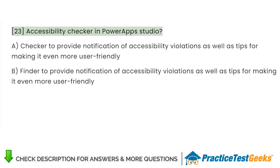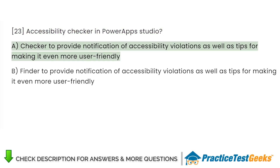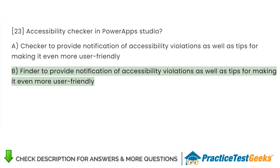Accessibility checker in Power Apps Studio: A. Checker to provide notification of accessibility violations as well as tips for making it more user-friendly. B. Finder to provide notification of accessibility violations as well as tips for making it more user-friendly.